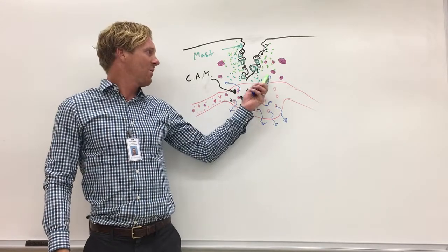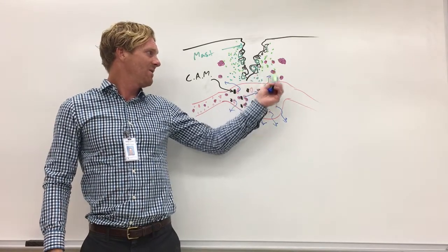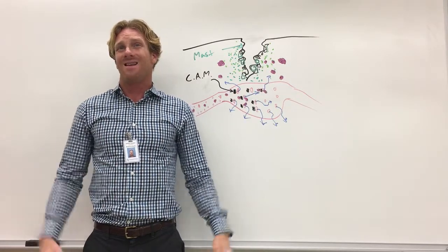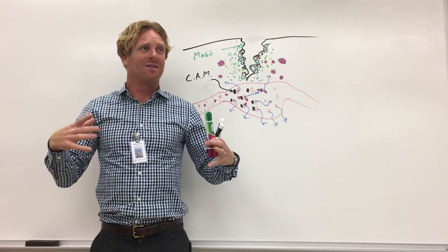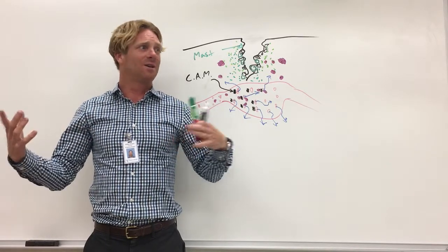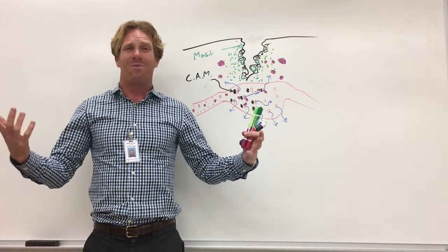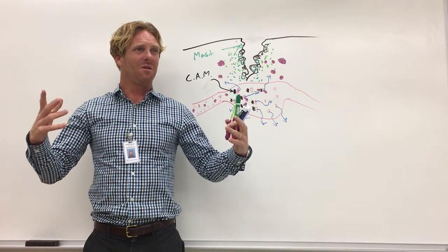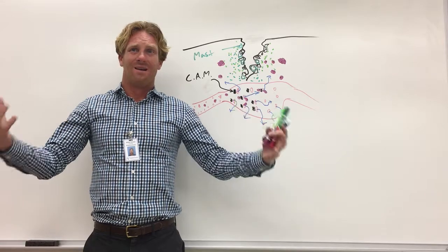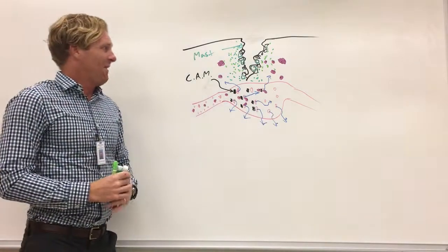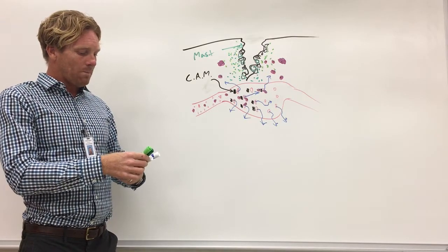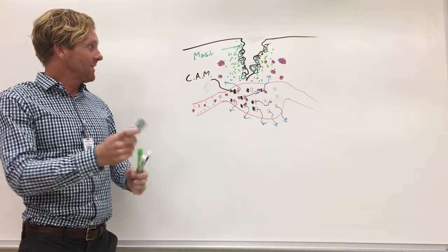But if there's quite a few bacteria and these white blood cells are having a hard time eating them all, then you've got a battle going on. Each side has a lot of cells die—both bacteria and our white blood cells. That produces a nasty milky white solution called pus. If that accumulates, you might have what's called an abscess—a big collection of pus.